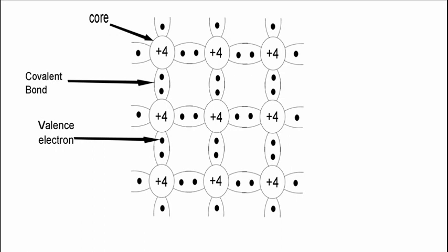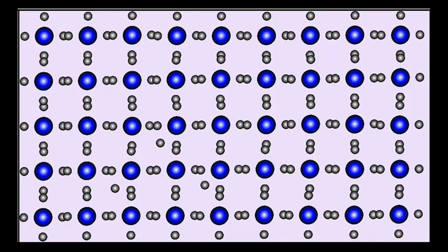Impurity atoms are added to the silicon to increase its conductivity. This process is called doping.